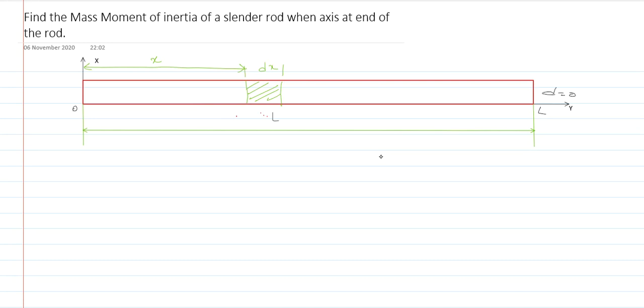Now, mass of the element, that is dm, is equal to m dx, where m is the unit mass, that means mass per length. Small m is equal to capital M by L, so capital M is the total mass.